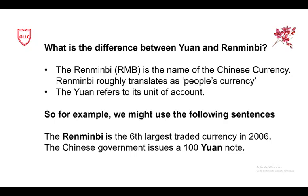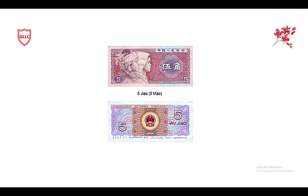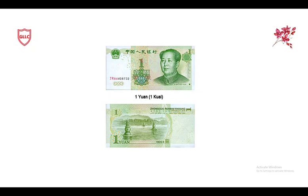Here is the first currency note: one Jiao — we can say 'yi mao' or in Chinese it's pronounced 'yi jiao.' The next note is also Jiao — you can see it written on the currency note. The second note is five Jiao, which you can also say 'wu mao' in Chinese. Next is yi Yuan, which Chinese people commonly say as 'yi kuai.'